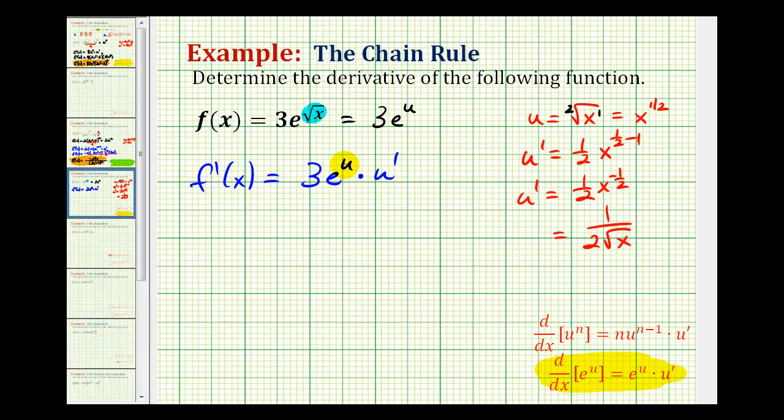So now we have everything that we need. We know u is equal to the square root of x. So f prime of x is equal to three times e to the square root x times one all over two square root x.